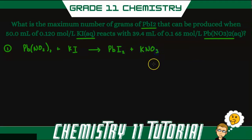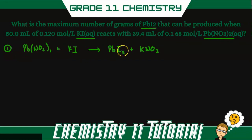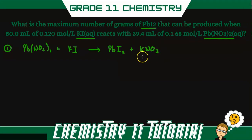The reason we have two iodides is that nitrate has a charge of negative one, and since we have two of them, lead has a charge of positive two. Iodide only has a charge of negative one, so we need two of them to balance. We follow the same rules for potassium nitrate. If you're unsure about those rules, check my tutorial on nomenclature, linked at the top of this video.